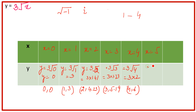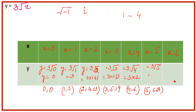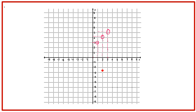x = 5 भी ले लेते हैं: √5 ≈ 2.23, तो y ≈ 6.69. Point: (5, 6.69). चाहें तो x = 6 भी try कर सकते हैं — वहाँ भी 6-something आएगा। लेकिन यहाँ तक enough है।